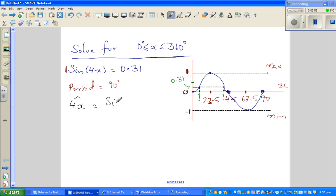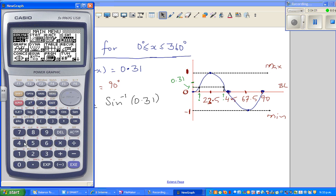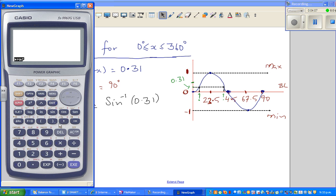is sin inverse of 0.31. So where's my calculator? I'll set it in degrees first. Degrees, and then I go shift sine of 0.31, close the bracket. I should have put a bracket here, and equal.